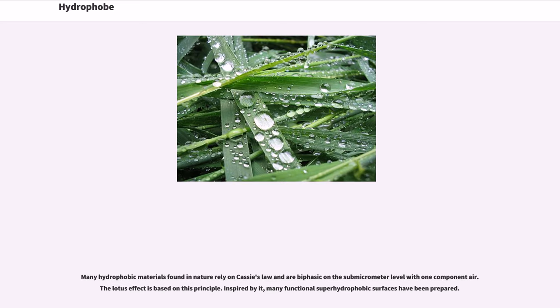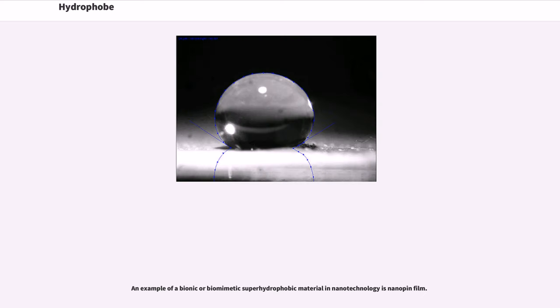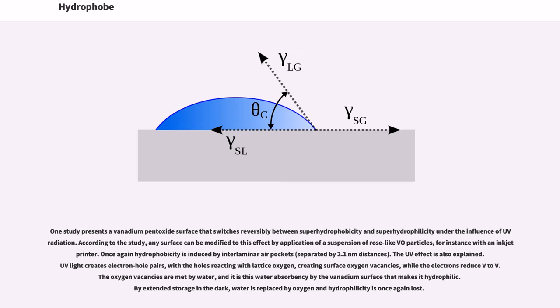Many hydrophobic materials found in nature rely on Cassie's law and are biphasic on the submicrometer level with one component air. The lotus effect is based on this principle. Inspired by it, many functional superhydrophobic surfaces have been prepared. An example of a bionic or biomimetic superhydrophobic material in nanotechnology is nanopin film.